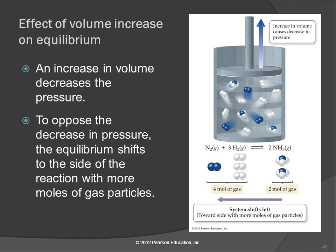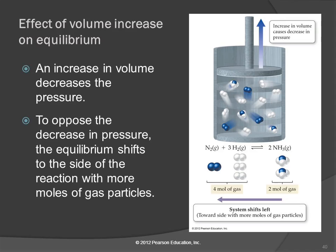What if we increase the volume? Same reaction — we lift the piston up and increase the volume. That causes the pressure to decrease. The system doesn't want change; if you change it, it tries to undo the change. So we increase the volume, that decreases the pressure, and the equilibrium is going to shift in a direction to increase the pressure. It wants to go back, so it shifts to the left side — the side that has more particles of gas.